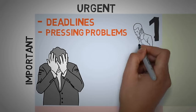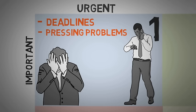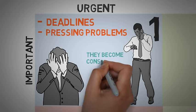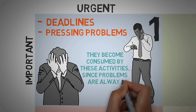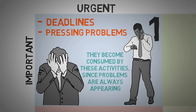People who have their lives focused on these activities are continuously working to solve crises and respond to deadlines. They become consumed by quadrant one activities since problems are always appearing one after another. When they have free time, they usually spend it trying to make themselves forget about their routine in activities to relax and waste time.